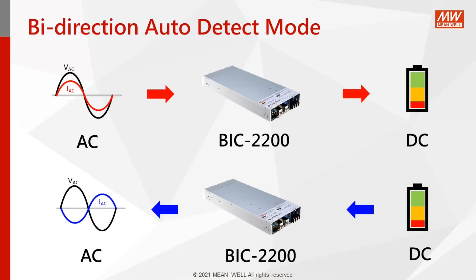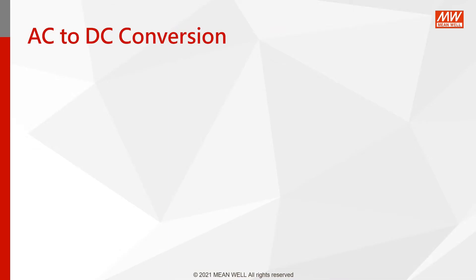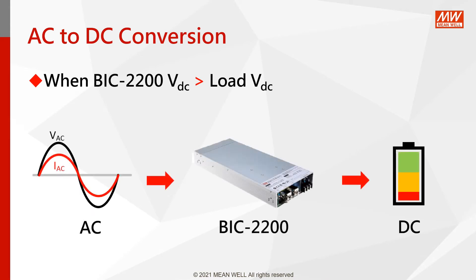Before giving you an actual demonstration, let's talk about the operating principle of the BIC-2200. The factory mode of the BIC is bi-direction auto-detect mode. When the BIC detects its target voltage that is higher than the DC end voltage, it converts AC to DC.